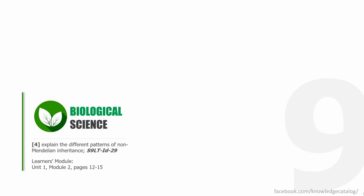Welcome to session 10 of Grade 9 Biology — finally we're having two digits! This is biological science intended for Grade 9. Our learning competency is still explaining the different patterns of non-Mendelian inheritance. You will be needing your learner's module opened to module number two, unit one, pages 12 to 15.